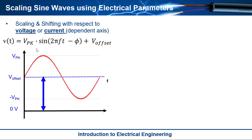And so that really is all there is to scaling and shifting the amplitude and offset of a sine wave. And so now we have our complete form of a sine wave. So we have this expression right here. So v_pk multiplied by sine 2πft minus phi plus a v_offset.